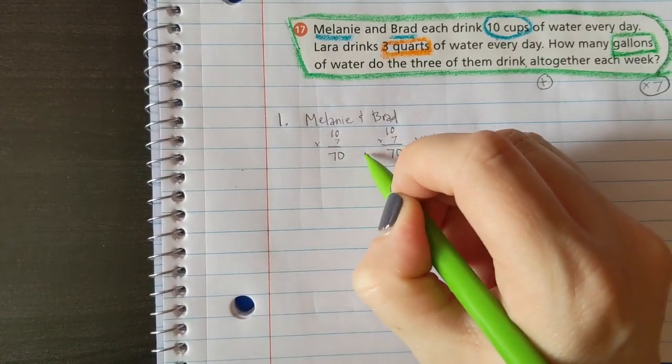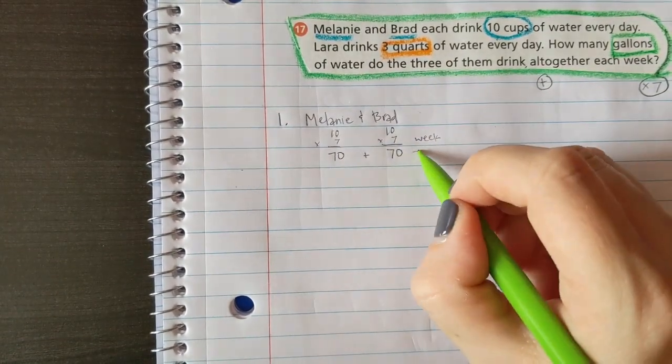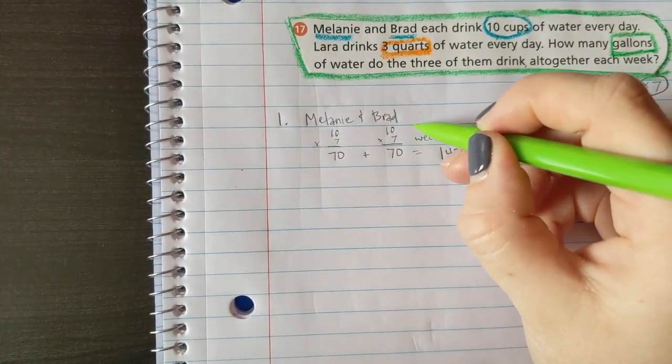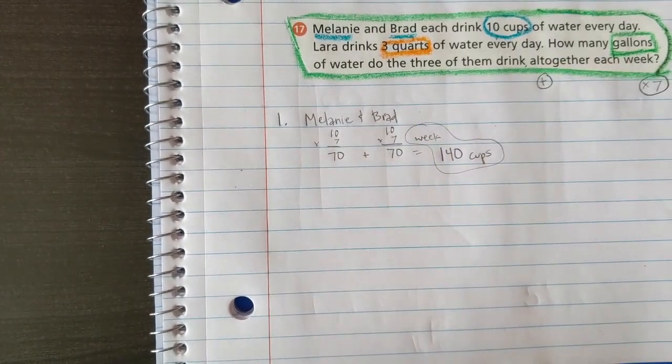70 and 70, so together Melanie and Brad drink 140 cups a week. That's important. That was step one.